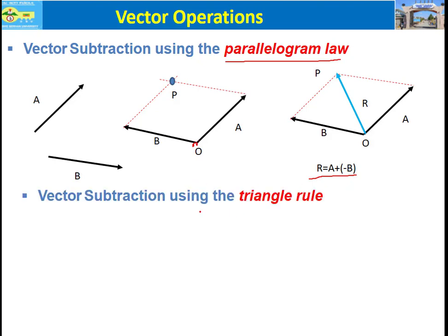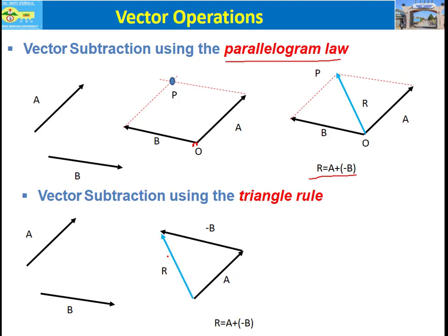We can also use the triangle rule to subtract vectors. If we want to subtract vector B from vector A, same as with the parallelogram law, we place vector A and then connect negative vector B head to tail — not tail to tail. The resultant vector is then R equals A minus B.